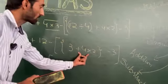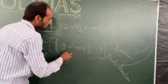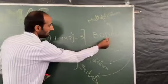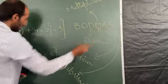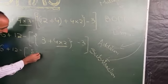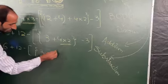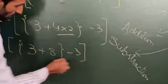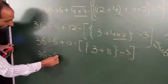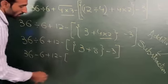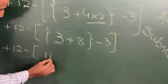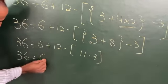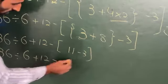Now here we have two operations inside this bracket. Following BODMAS, we are not having division but we do have multiplication, so before addition we do multiplication first: 4 twos are 8. So we have 3 plus 8, which equals 11. Then we have 36 divided by 6 plus 12 minus 11 minus 3, and that gives us 8 inside the long bracket.